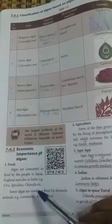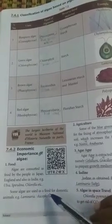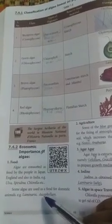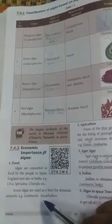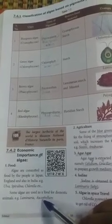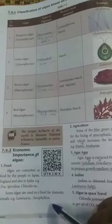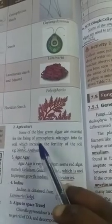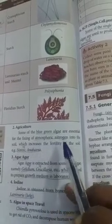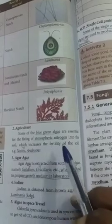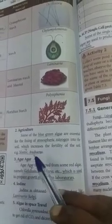Some algae are used as food for domestic animals — examples include Laminaria and Ectocarpus. Next, in agriculture: some blue-green algae are essential for fixing atmospheric nitrogen into the soil, which increases the fertility of the soil. Examples are Nostoc and Anabaena.